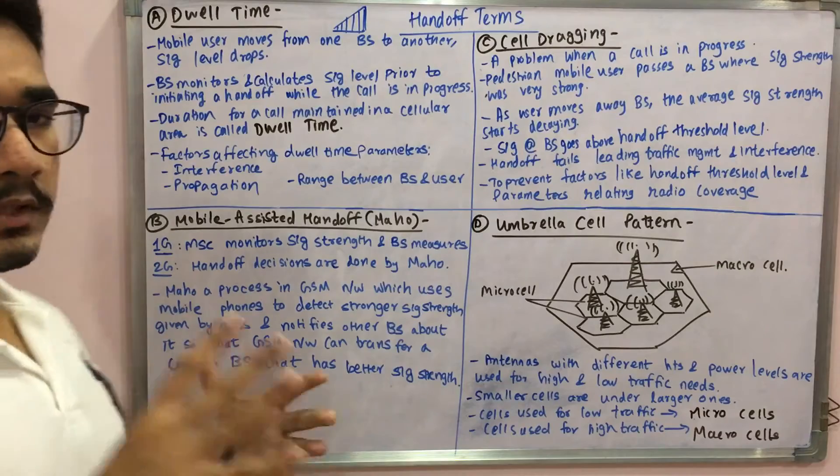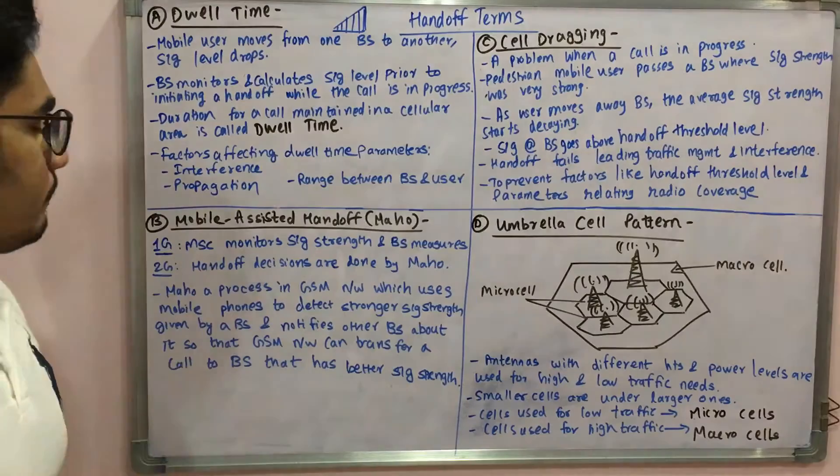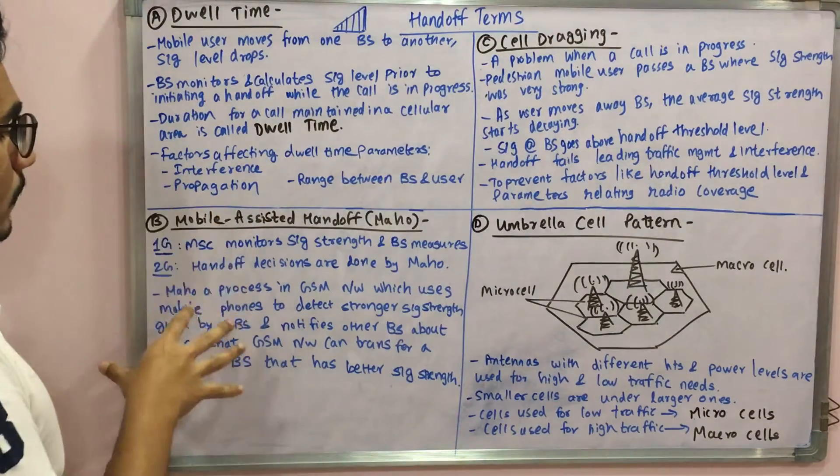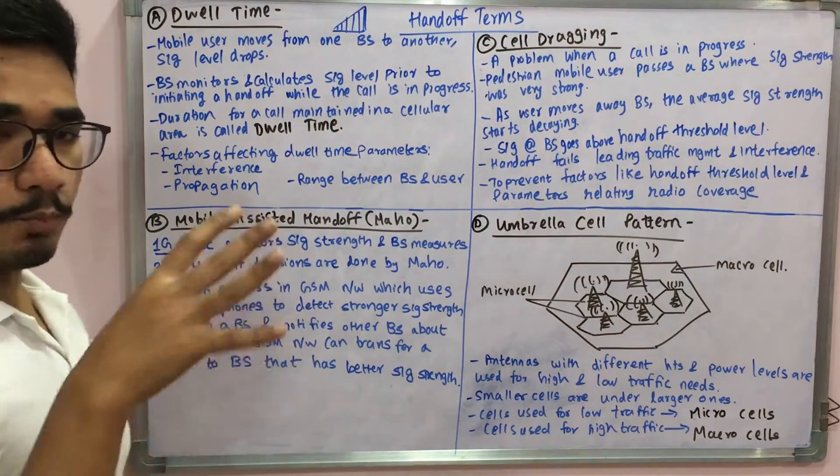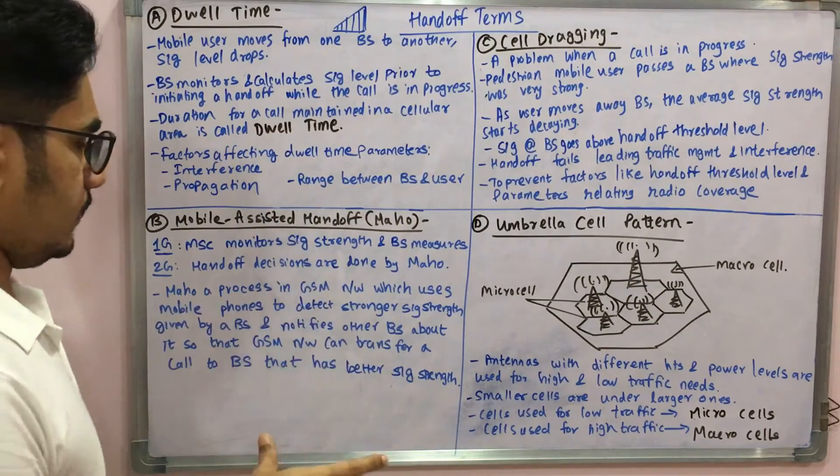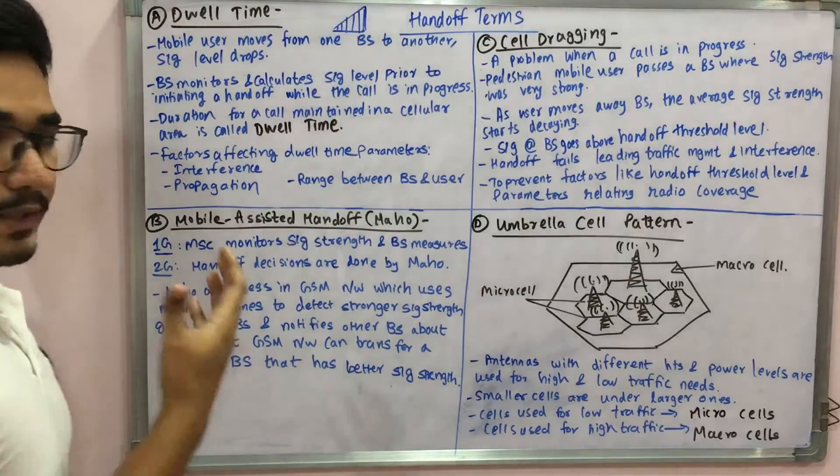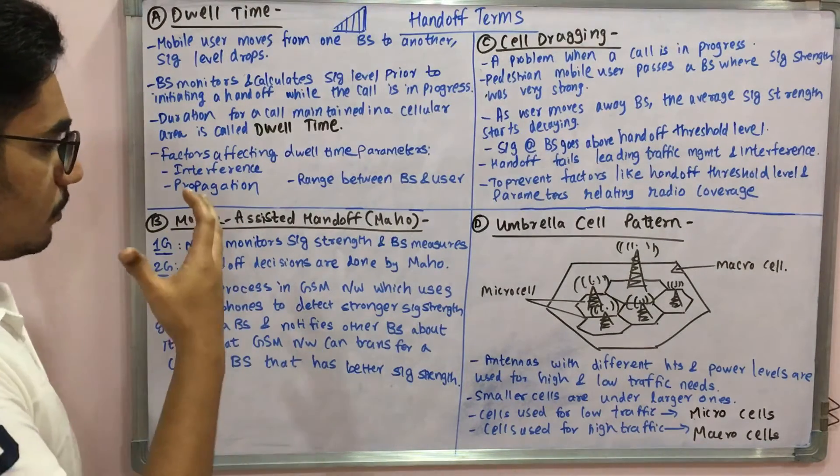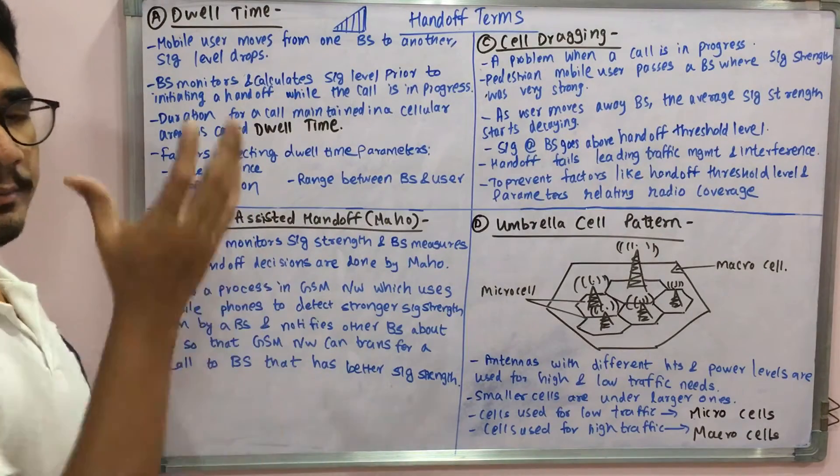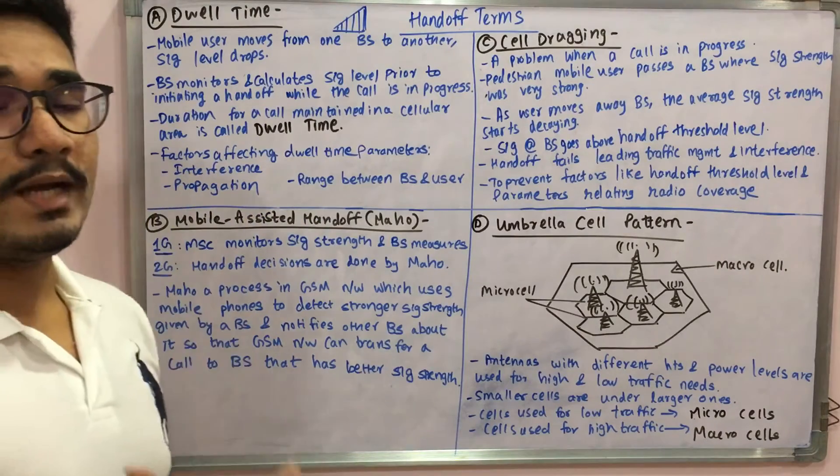Next we have a term called MAHO, which is called Mobile Assisted Handoff. In the first generation of cellular networks, the MSC (Mobile Switching Center) monitors the signal strength and the base station measures the signal strength. But as time passed on, we had the second generation of mobile network. In this, all the handoff decisions which were done previously by the MSCs and base stations are now handled by MAHO.